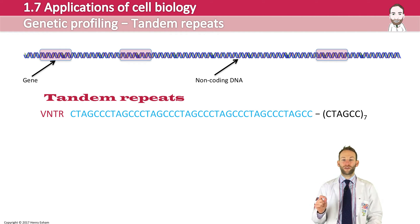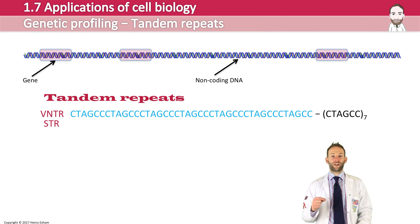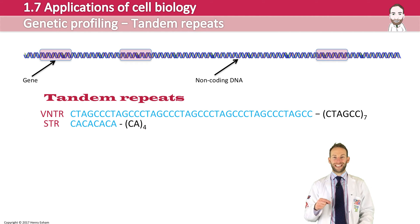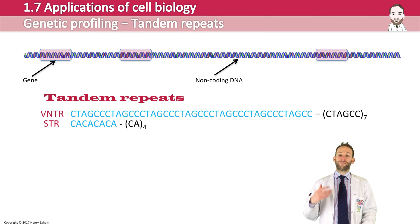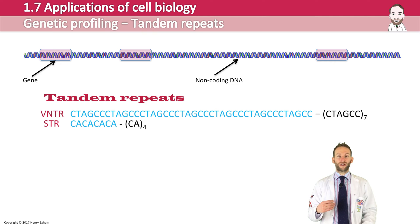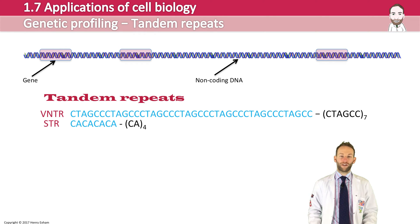Or you can have even shorter repeats — short tandem repeats, STRs — which are repeats of between one and six bases long. For example, this one is just a repeat of only two bases, CA, which has been repeated four times. The number of times these repeats occur is hugely variable between individuals, so these are the areas that we really want to isolate and analyse in order to form our genetic profile.